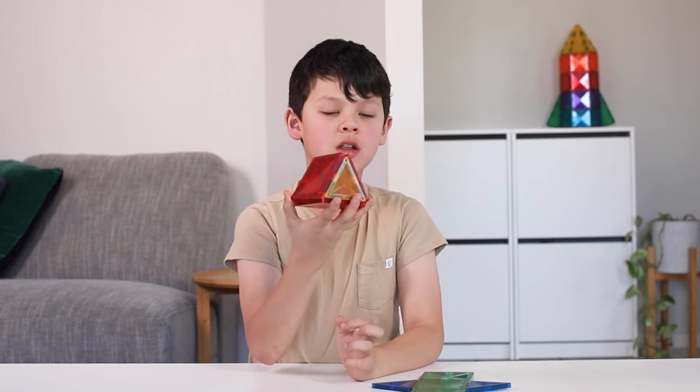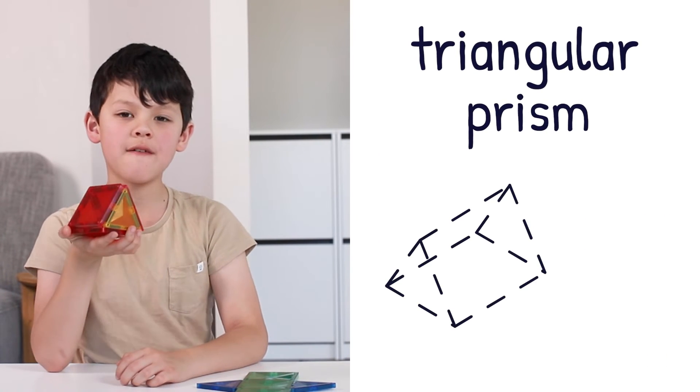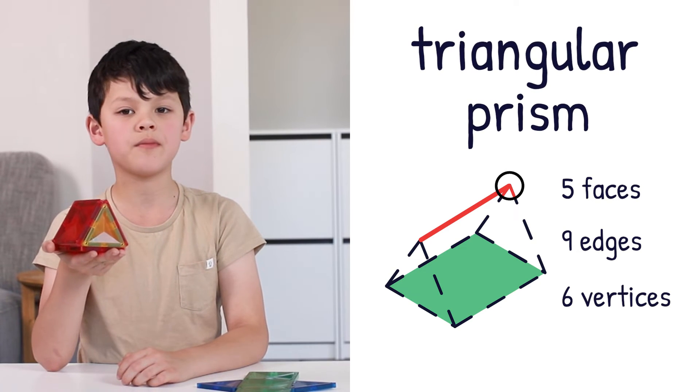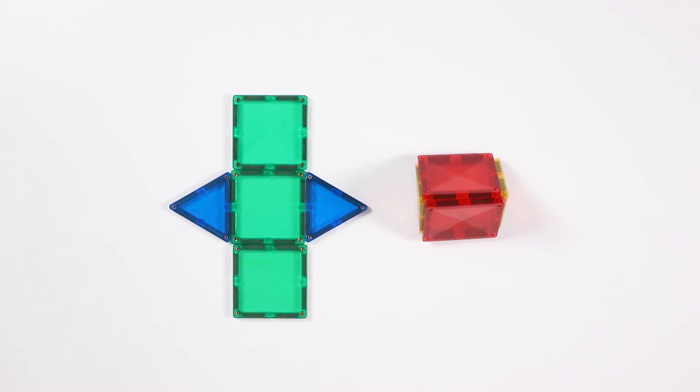This is a triangular prism. It has 5 faces, 9 edges, and 6 vertices. This is the net for the triangular prism. It has 5 faces. Let's fold it up.